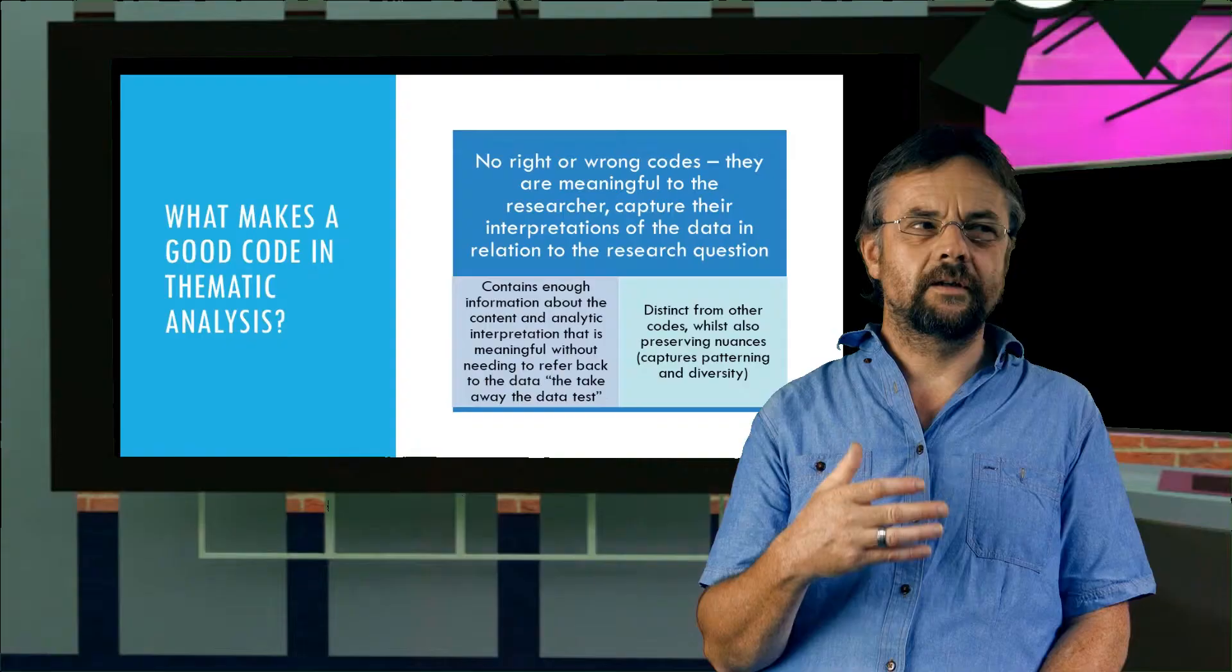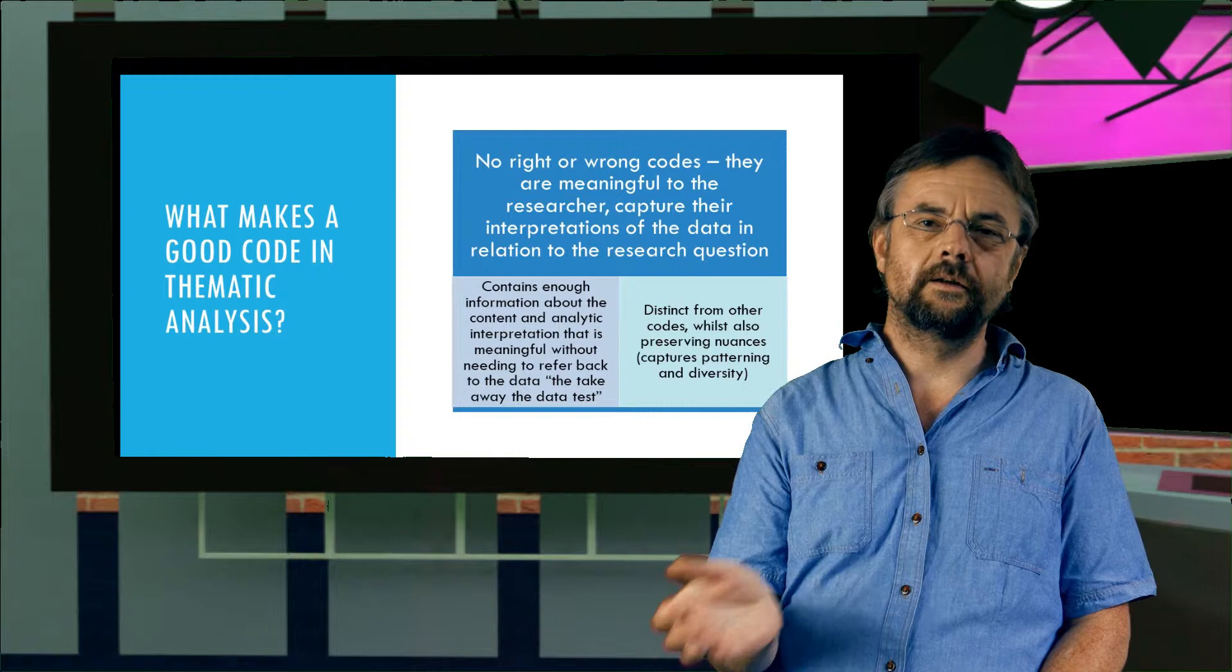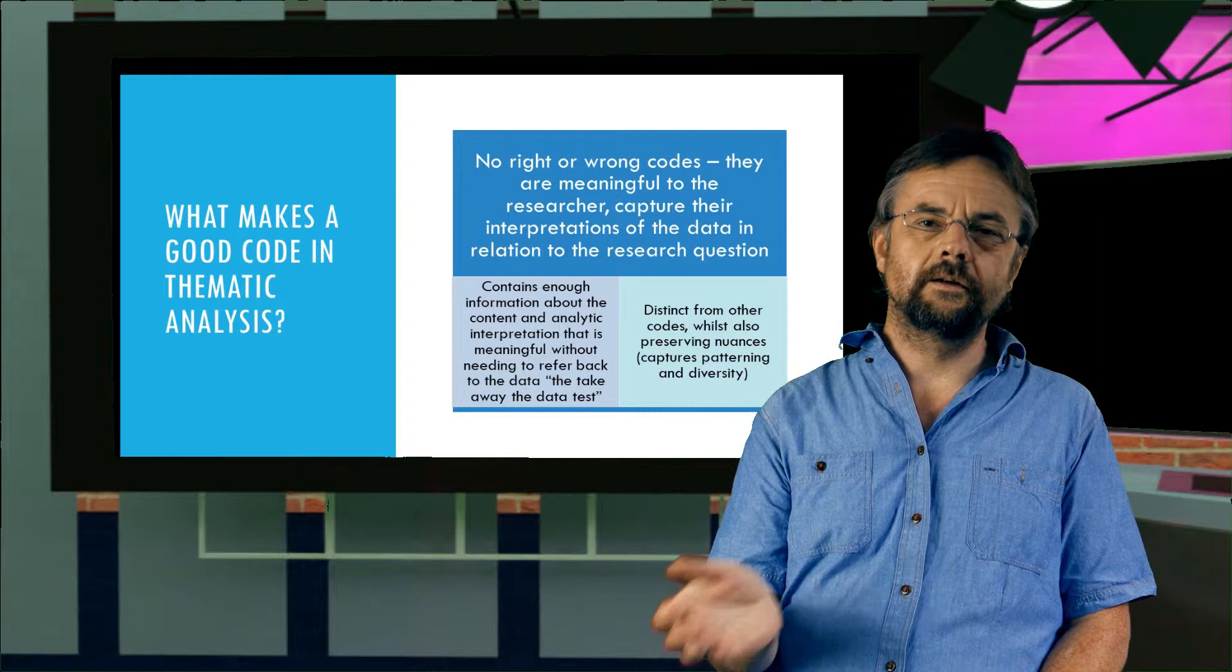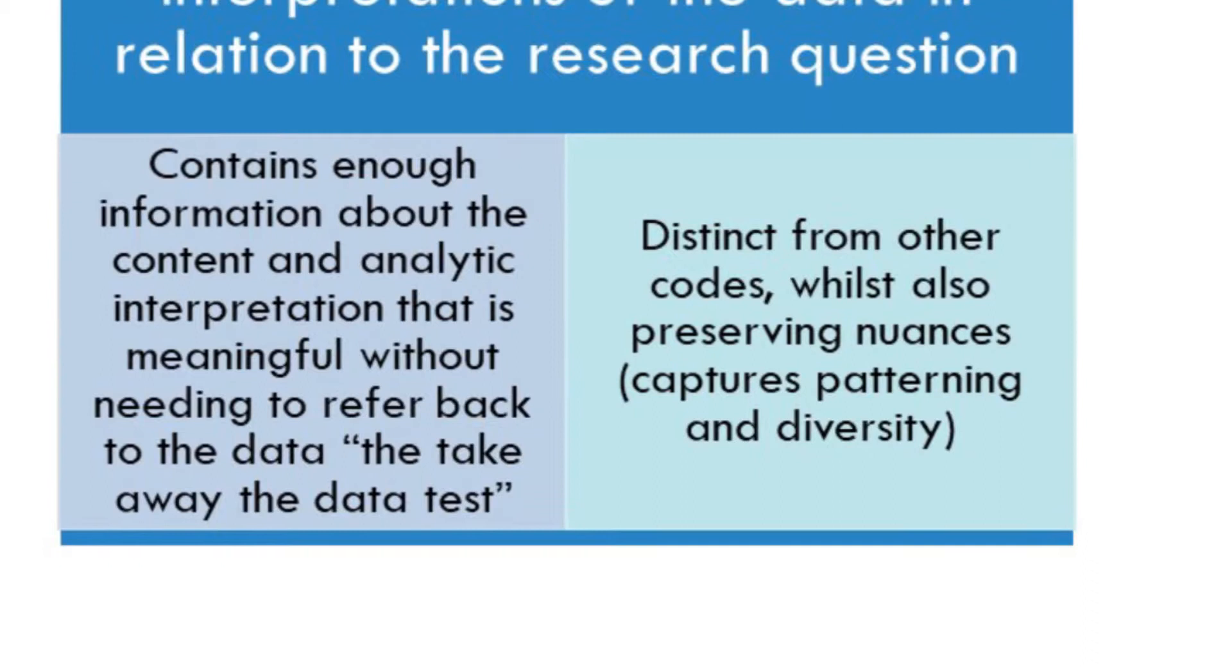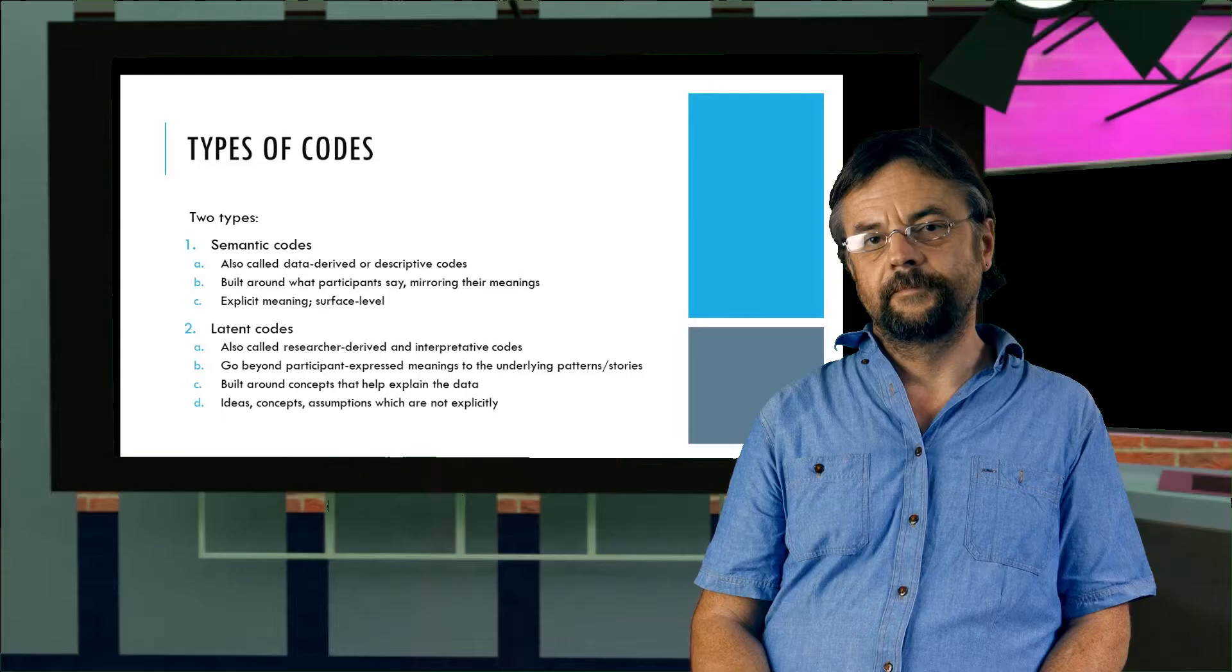It might not capture your data. So you go back to your data and find a code that better captures the data. Also codes need to be mutually discrete, not to overlap with each other. But they also need to capture the nuances in your data.